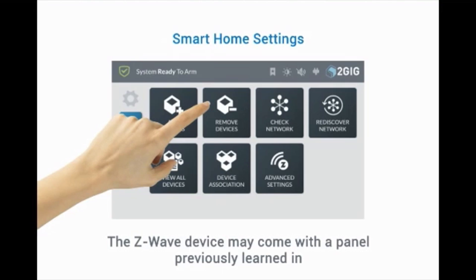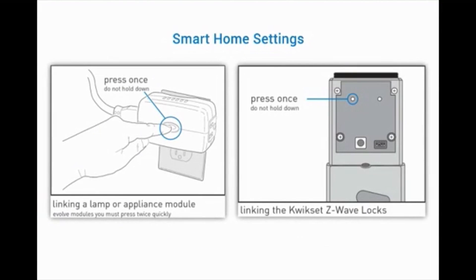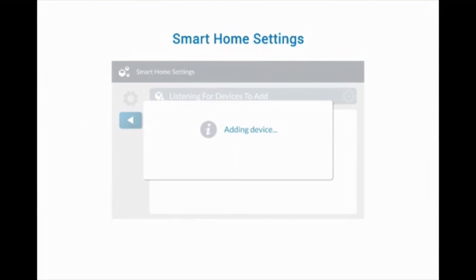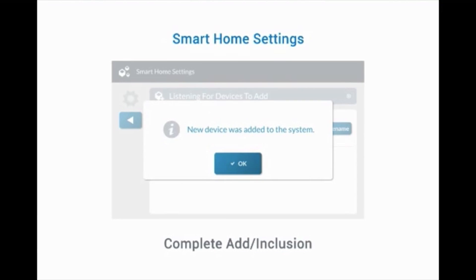Z-Wave devices are learned in in various ways. For example, a lamp module requires a double tap, while a quick set door lock requires a single press of the Learn button. Once the device is learned in, wait until the Add or Inclusion process has been completed. Once the device is added, press OK.